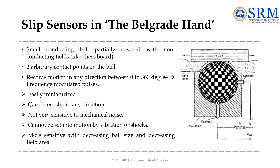Imagine a small ball that is partly conductive — like metal — and has non-conductive sections, similar to a chess board pattern as seen in the picture. By touching two different spots on this ball, the system can tell how it moves in any direction from 0 to 360 degrees by giving pulses with varying frequencies. This system is easy to miniaturize, great at noticing when something starts to slip in any direction, and is not easily disturbed by outside movements, noise, vibrations, or shocks. In fact, the smaller the ball and the less space it has to move around, the better it works.